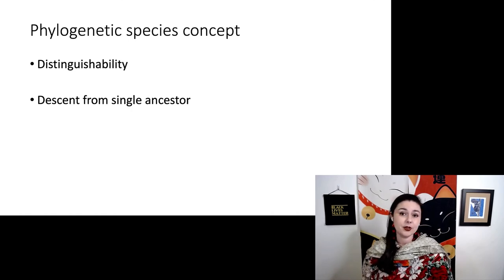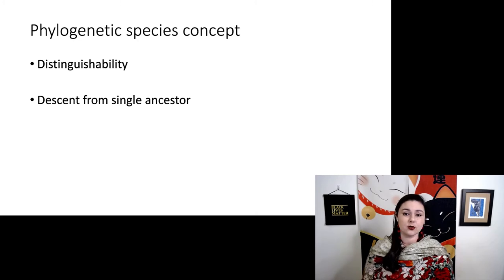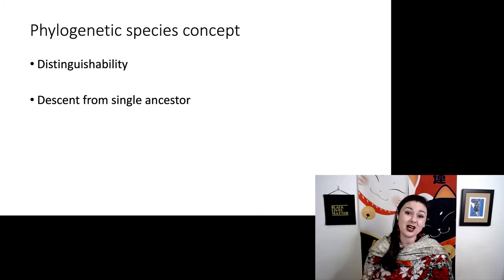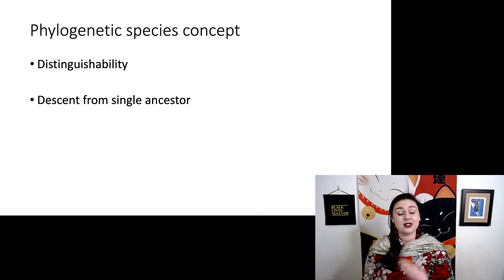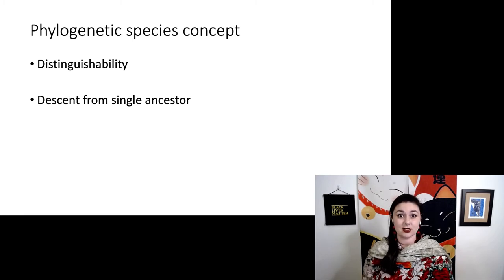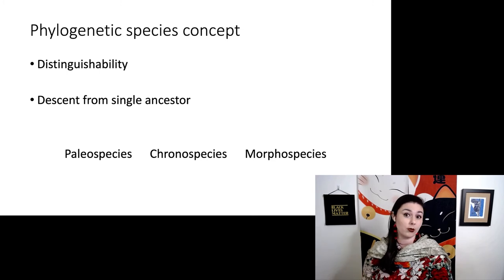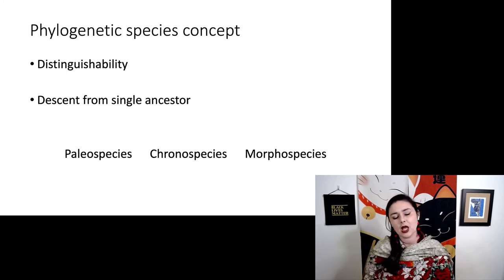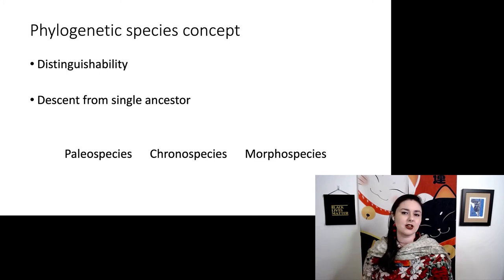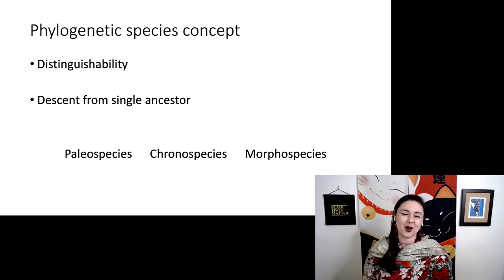Sometimes people propose different terms to define fossil species because they're harder to investigate the same way as living species. You might hear the names paleospecies, chronospecies, or morphospecies. Generally, most biologists agree that these terms are not necessary, but that's why you might encounter them.